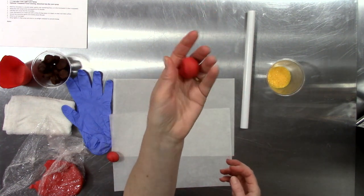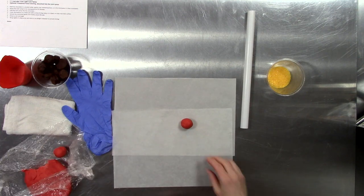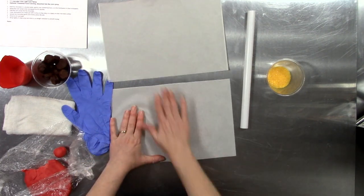Today we're making roses out of modeling chocolate. This is pre-colored chocolate and I've already made the modeling chocolate recipe, colored it, and let it condition.